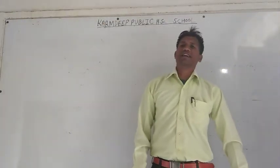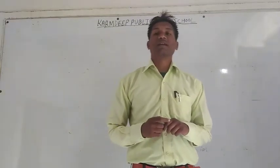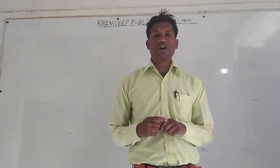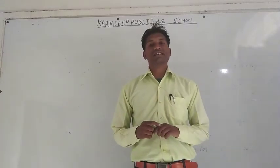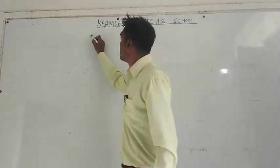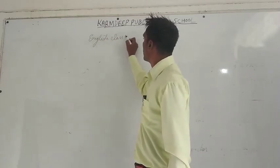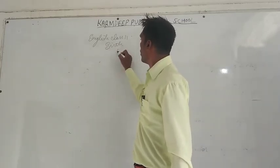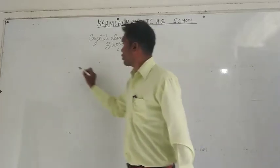Hello students, we are in Class 11. Yesterday we completed the Exploration and Summary part of our lesson — 'The Birth' from your Snapshot English supplementary reader. Today we are going to see the long question answers from the back exercise. So students, take out your books. Class 11 English. Chapter name: Birth. Author's name: A.J. Cronin. Long question answers.